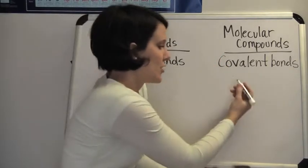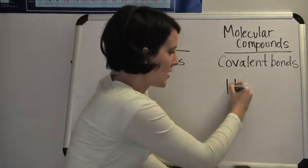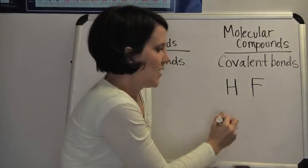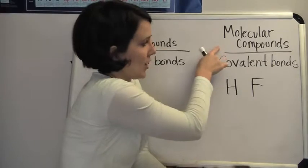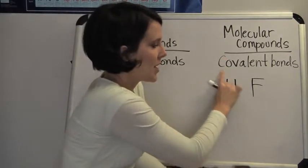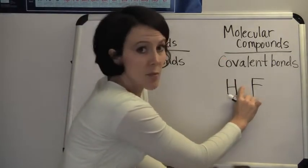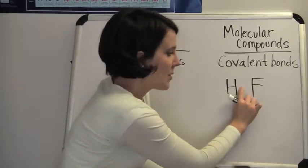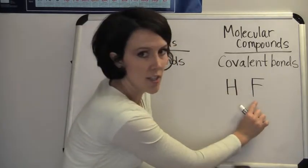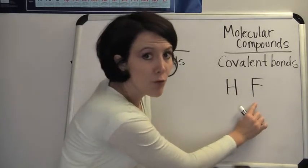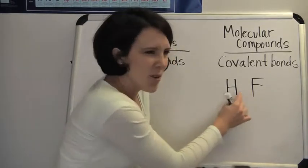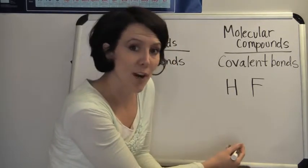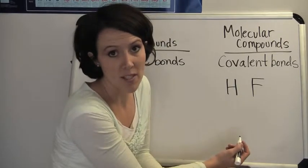Let me illustrate. For example, if we have hydrogen and fluorine in a molecular compound, the covalent bond exists between them. Hydrogen fluoride has a bond connecting the hydrogen and the fluorine atom. Now how do we draw or represent that? That's where Lewis dot structures come into play.